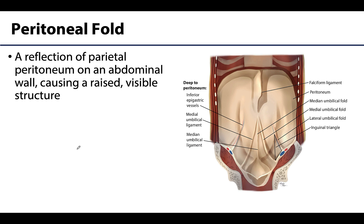Lastly, peritoneal folds — as their name suggests, they have something to do with peritoneum. In the case of folds, the peritoneum more covers a structure rather than connecting them — think of putting a sheet of peritoneum over an already existing structure, and that structure will create a little bump in the sheet. That's what peritoneal folds are. The most prominent are the umbilical folds: you have the median, medial, and lateral umbilical folds lying over developmental structures that are occluded, or neurovasculature in the case of the lateral umbilical fold.